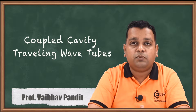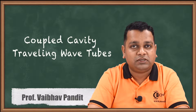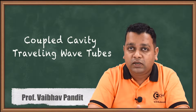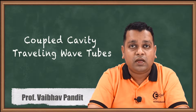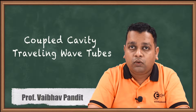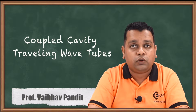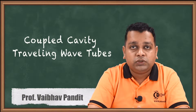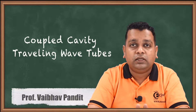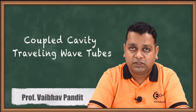The microwave linear beam tubes we have been dealing with throughout this particular chapter — right from the two-cavity klystron, multi-cavity klystron, reflex klystron, and the helix-type traveling wave tube — we have understood for microwave generation and microwave amplification. In all these microwave linear beam tube devices, the principle of operation was based on velocity modulation.